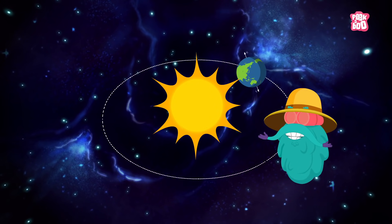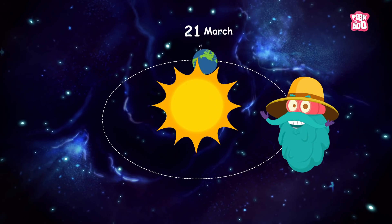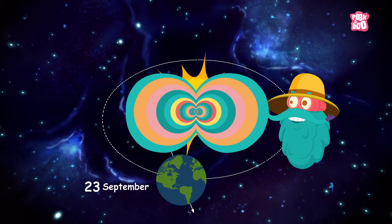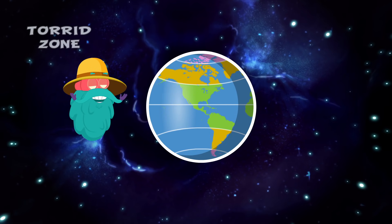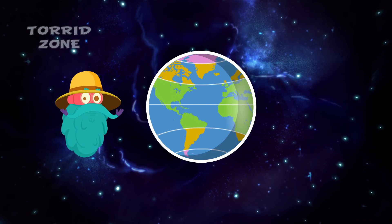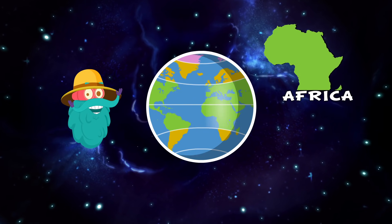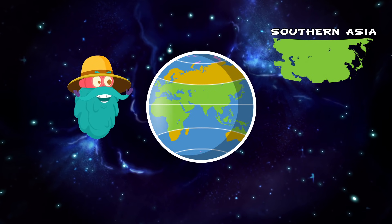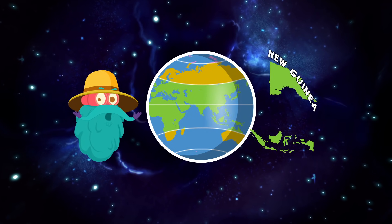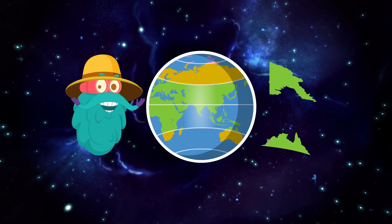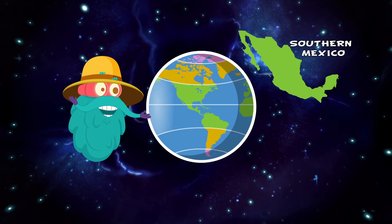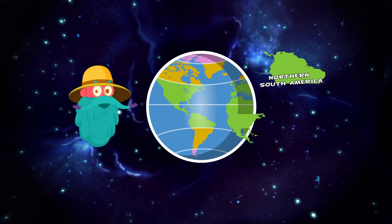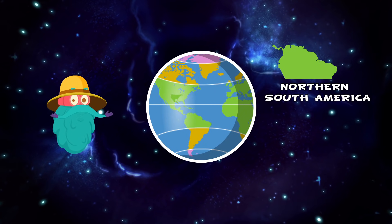It usually happens on March 21st and September 23rd. The torrid zone includes most of Africa, Southern India, Southern Asia, Indonesia, New Guinea, Northern Australia, Southern Mexico, Central America and Northern South America.